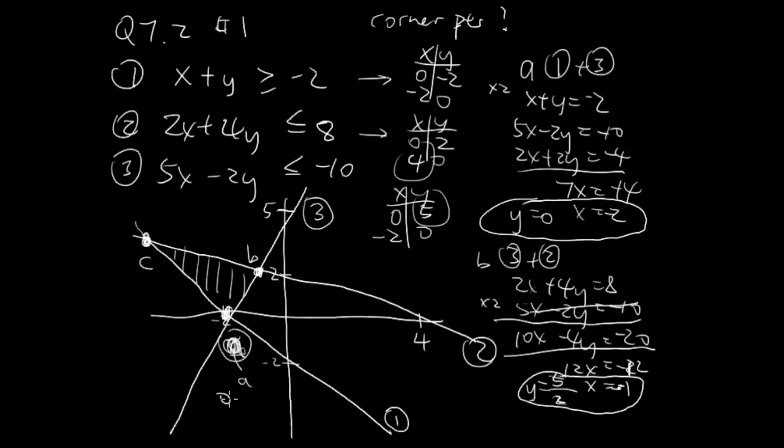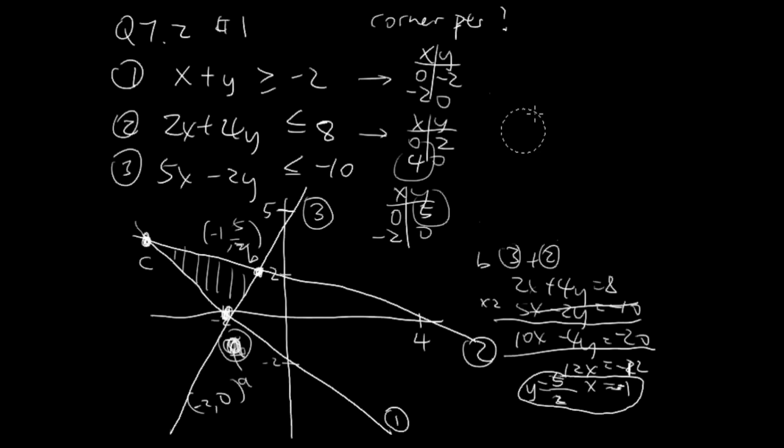I'm running out of space here. I'm going to erase this part. Finally we have our last point, which is point C, which is the combination of 1 and 2.